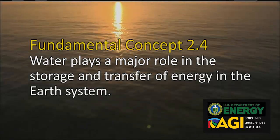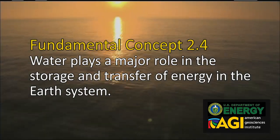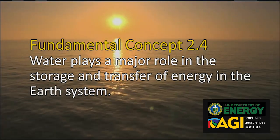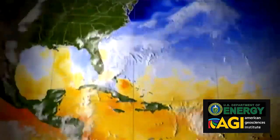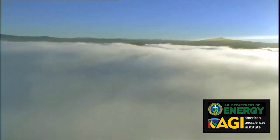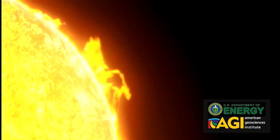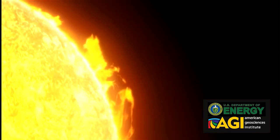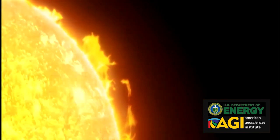Water plays a major role in the storage and transfer of energy in the Earth system. This major role is a result of water's prevalence, high heat capacity, and the fact that phase changes of water occur regularly on Earth. The Sun provides the energy that drives the water cycle on Earth.